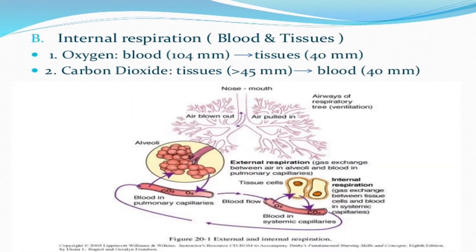Internal respiration occurs between the blood and tissues. The oxygen partial pressure in blood is 104 mmHg whereas in tissues it is 40 mmHg — higher in arteries and 40 mmHg in veins. Carbon dioxide partial pressure is 45 mmHg in tissues whereas in blood it is 40 mmHg.